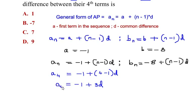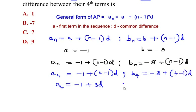Now for the second progression, the fourth term b_4 is equal to negative 8 plus 4 minus 1 times d. This simplifies to b_4 is equal to negative 8 plus 3d.